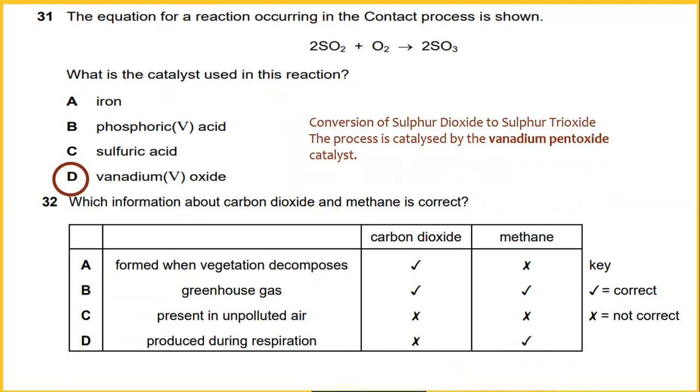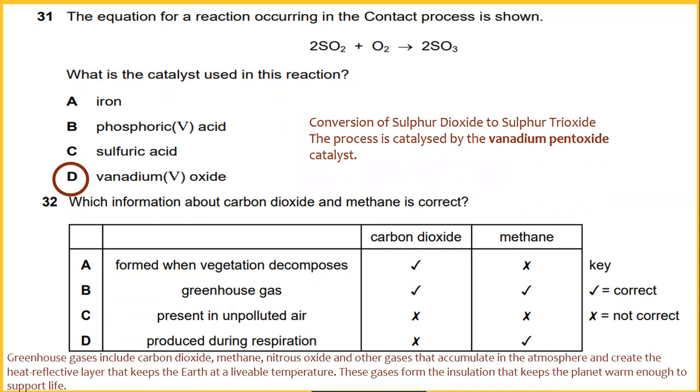Which information about carbon dioxide and methane is correct? When the greenhouse gases include carbon dioxide, methane, nitrous oxide, and other gases that accumulate in the atmosphere and create the heat-reflective layer and keep the earth at a livable temperature. These gases form the insulation that keeps the planet warm enough to support life. So I would say that in terms of greenhouse gases, that is the answer for number 32.